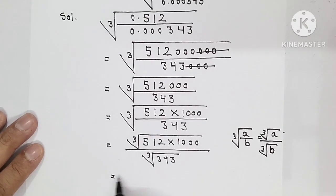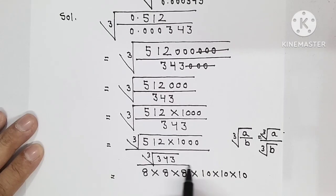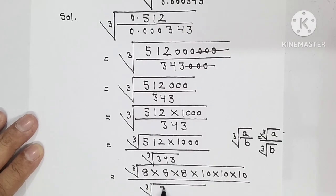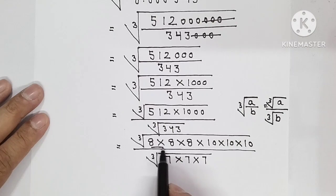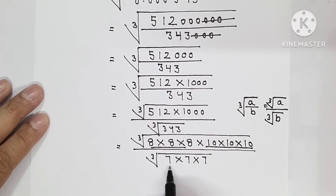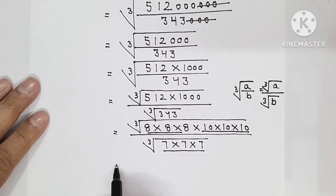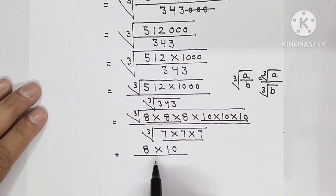So 512 is 8 times 8 times 8, and 1000 is 10 times 10 times 10. Taking the cube root, upon 343, which is 7 times 7 times 7. Each forms one group of triplets. From each group, we take one number once: 8 times 10 upon 7.